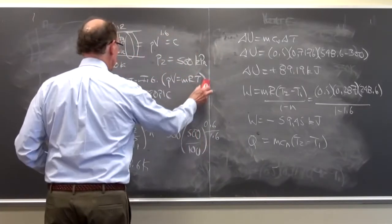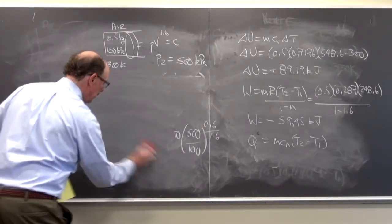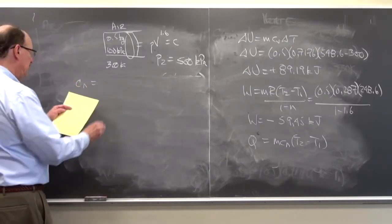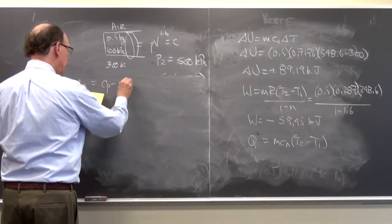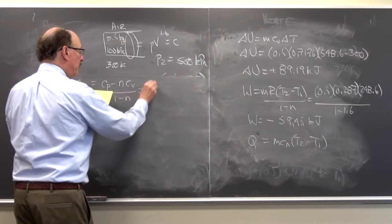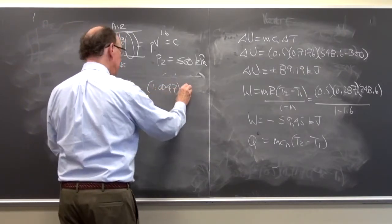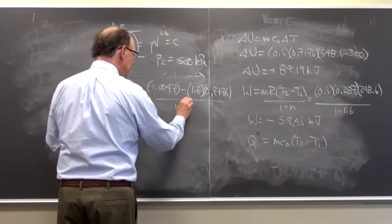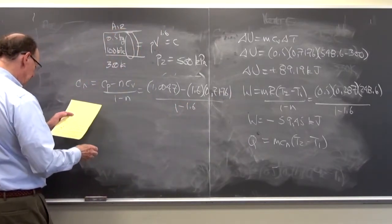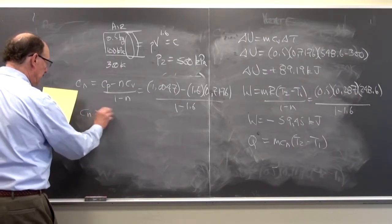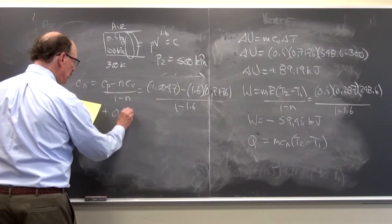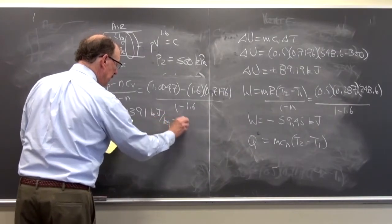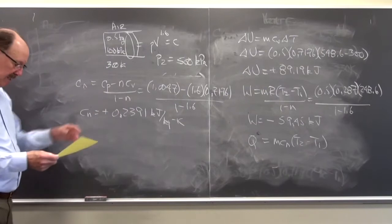So let me solve for C sub n. C sub n is equal to C sub n minus n C sub n over 1 minus n of 1.0047 times 1.6 times 0.7176 over 1 minus 1.6. I get that C sub n is equal to plus 0.2391 kilojoules per kilogram degree K.